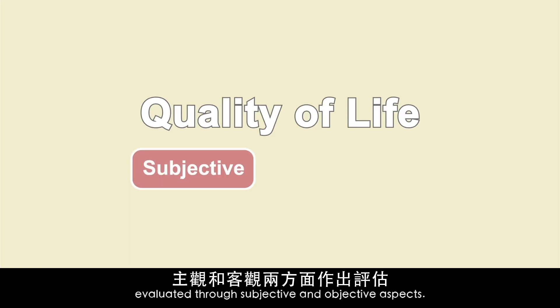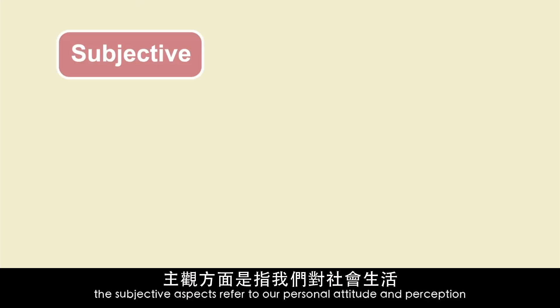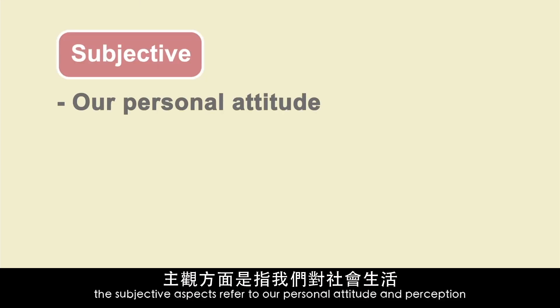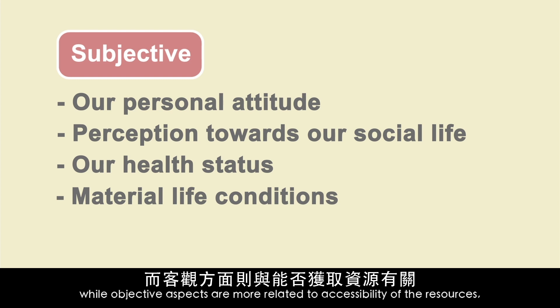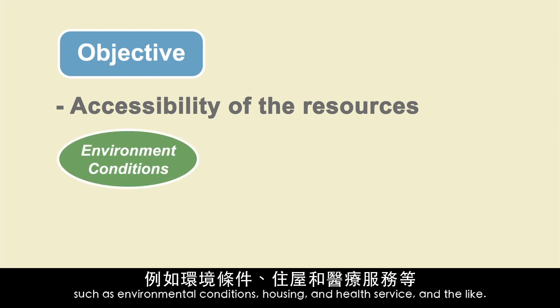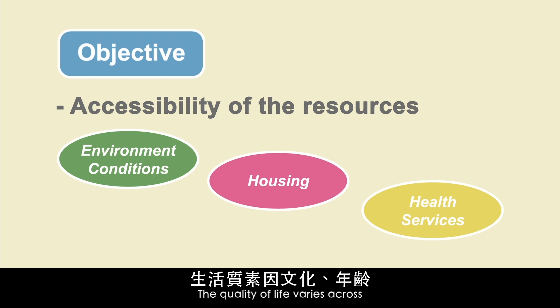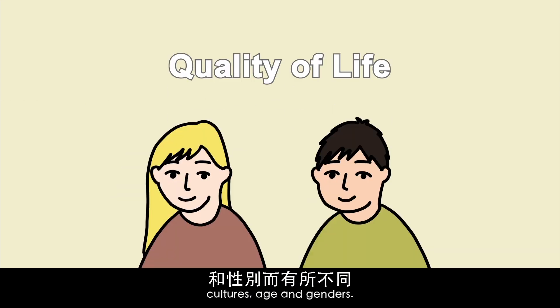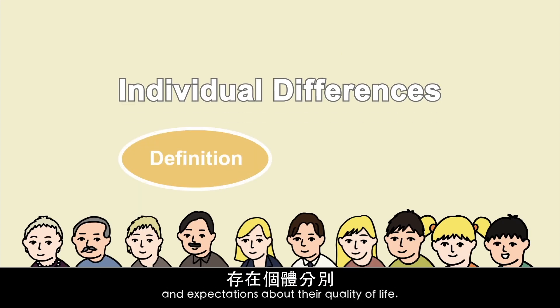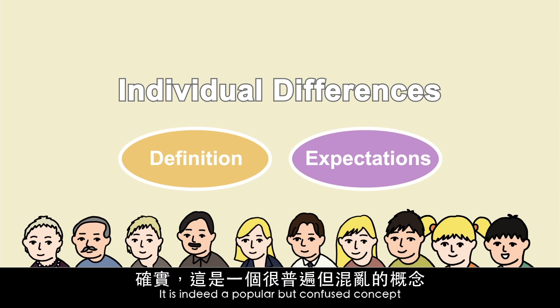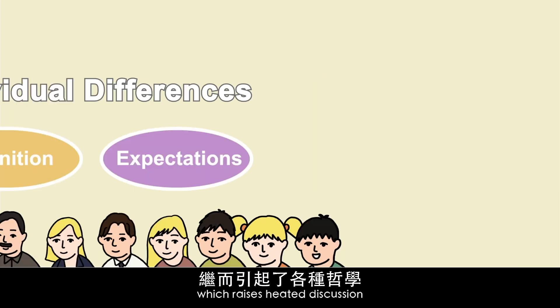The quality of life can be evaluated through subjective and objective aspects. Subjective aspects refer to our personal attitude and perception towards our social life, health status, or material life conditions. Objective aspects are more related to accessibility of resources, such as environmental conditions, housing, and health services. The quality of life varies across cultures, age, and genders. Therefore, individual differences exist, as everyone has their own definition and expectations of their quality of life. It is indeed a popular but complex concept, raising heated discussion among diverse philosophies and scientific research.